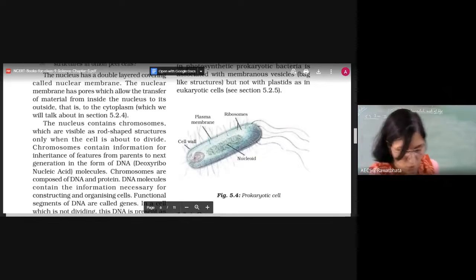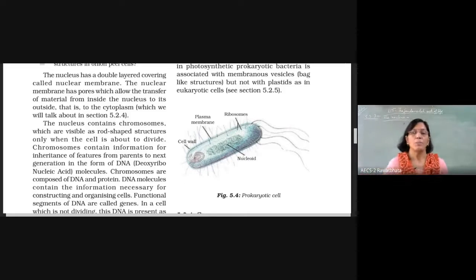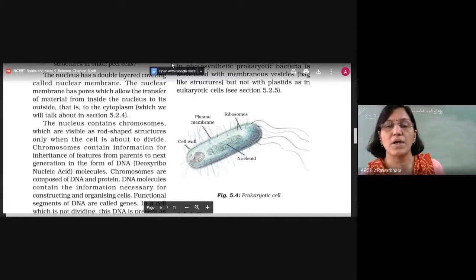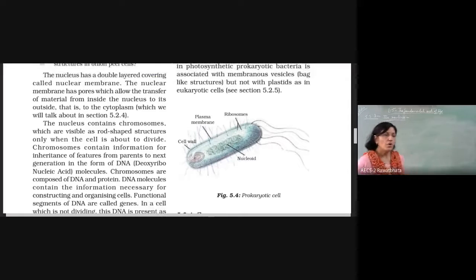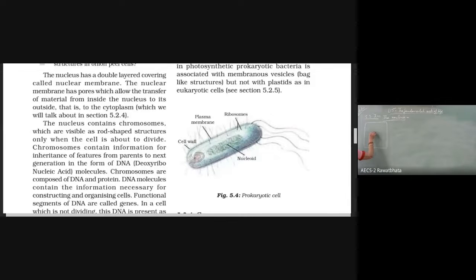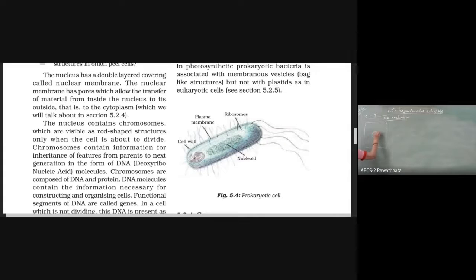We have covered initially that the nucleus in the case of plant cells is actually shifted to one side, whereas in the case of animal cells it takes the middle position of the cell. Now exactly the nucleus structure - it lies in the center of the cell. We are talking about a eukaryotic cell, the cell which has a properly developed nucleus, meaning the nucleus which lies in the center and is almost spherical in shape.